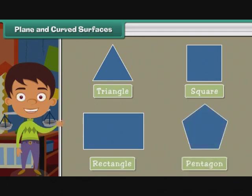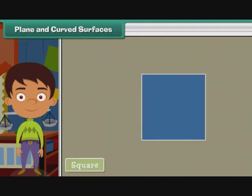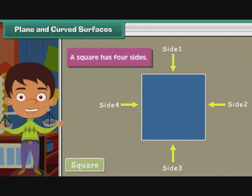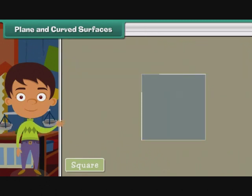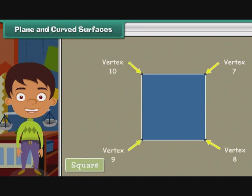Now we'll study plane figures, sides, and vertices. Look at this square. Arrows one, two, three, four indicate the sides of a square. A square has four sides. The point at which two sides meet is called a vertex. Arrows indicate the vertices of a square. So here we see a square has four vertices.